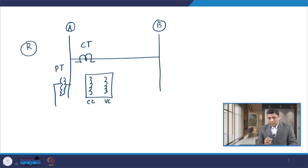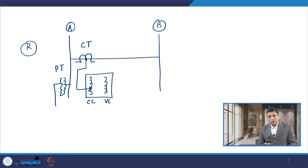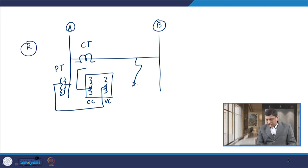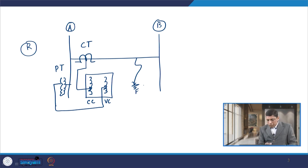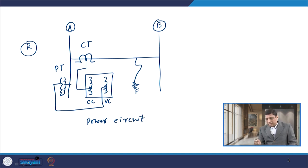The signal to the current coil of the relay is given through the secondary of the CT, whereas the signal to the voltage coil is given through the secondary of the PT. Whenever any abnormal condition or fault occurs on this line, depending upon the magnitude of current and whether the relay is a single input or two input relay, the relay operates and gives signal to the circuit breaker or further auxiliary relay. This circuit is known as the power circuit.